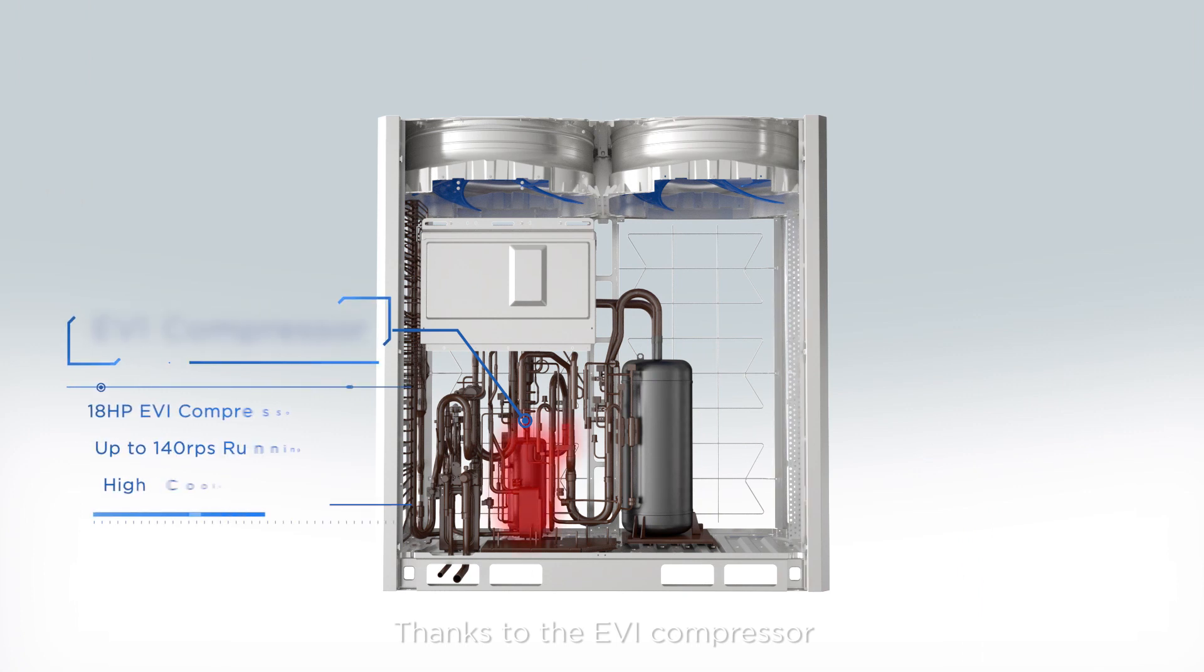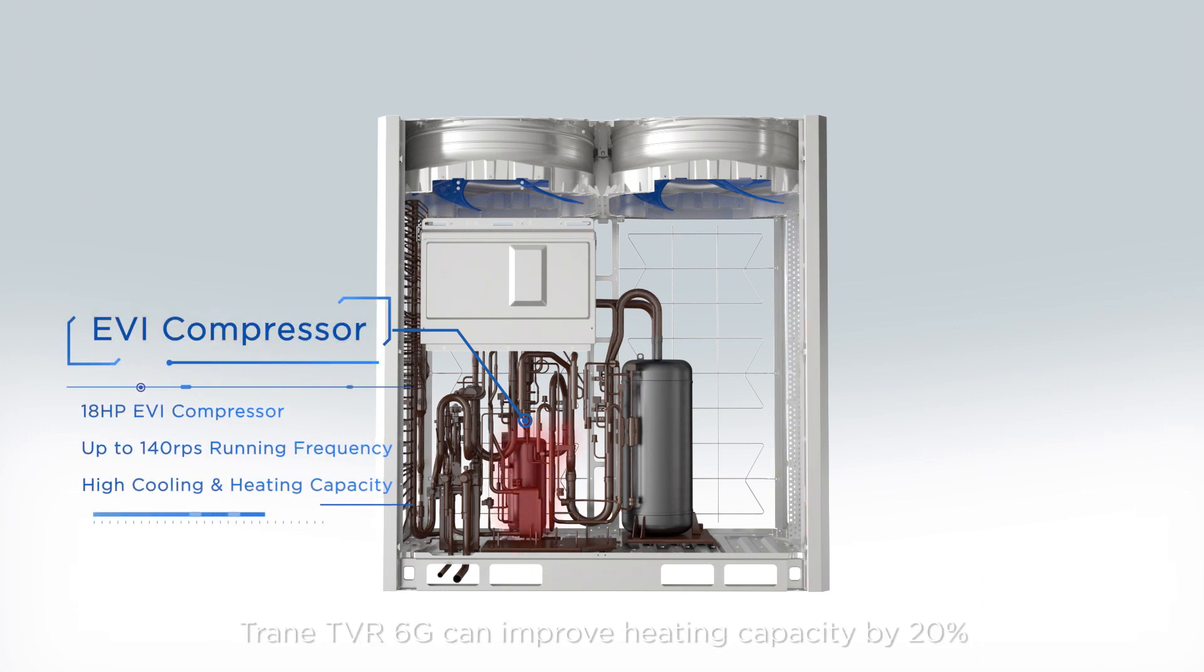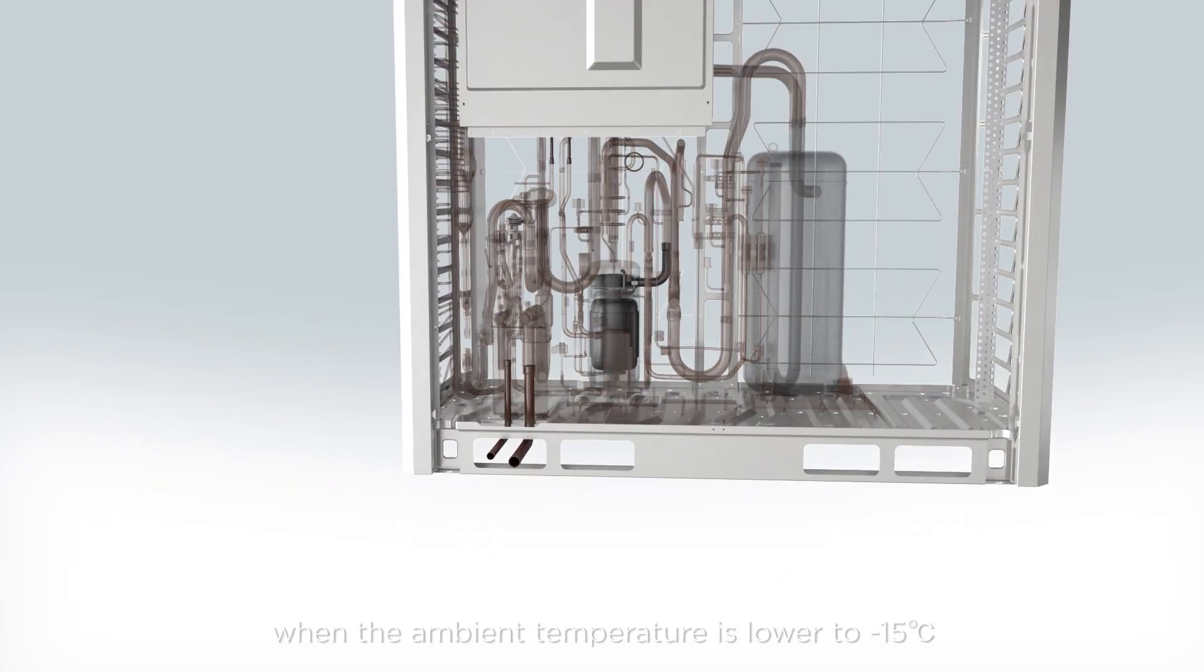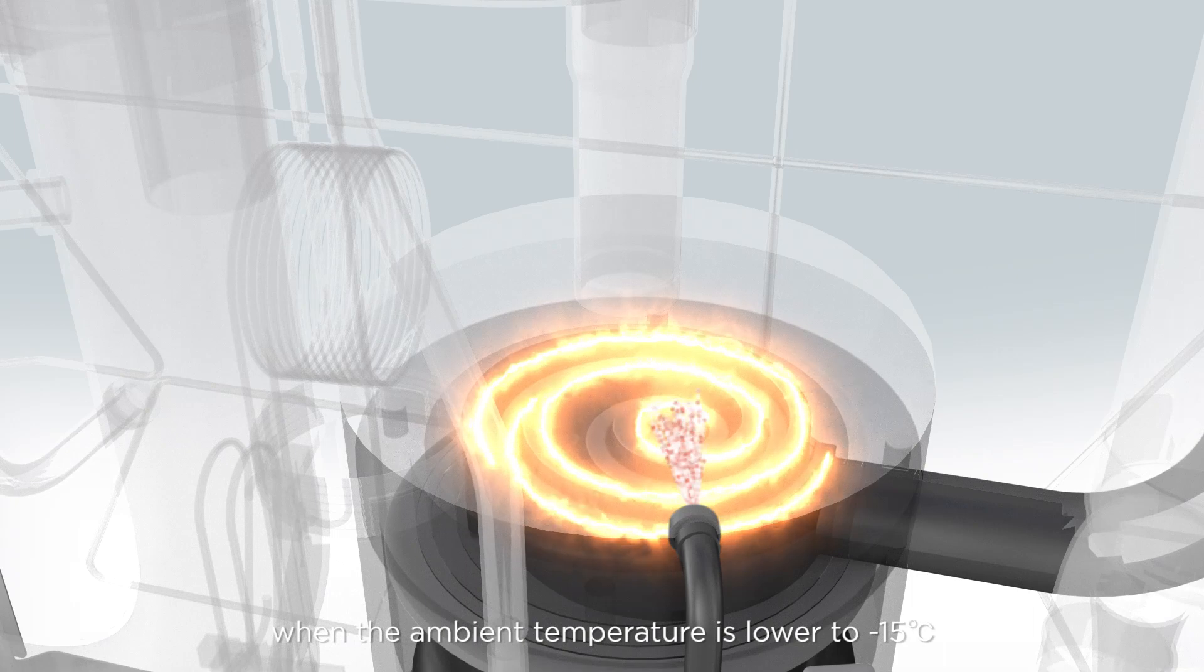Thanks to the EVI compressor, TrainTVR 6G can improve heating capacity by 20% when the ambient temperature is lower to minus 15 degrees Celsius.